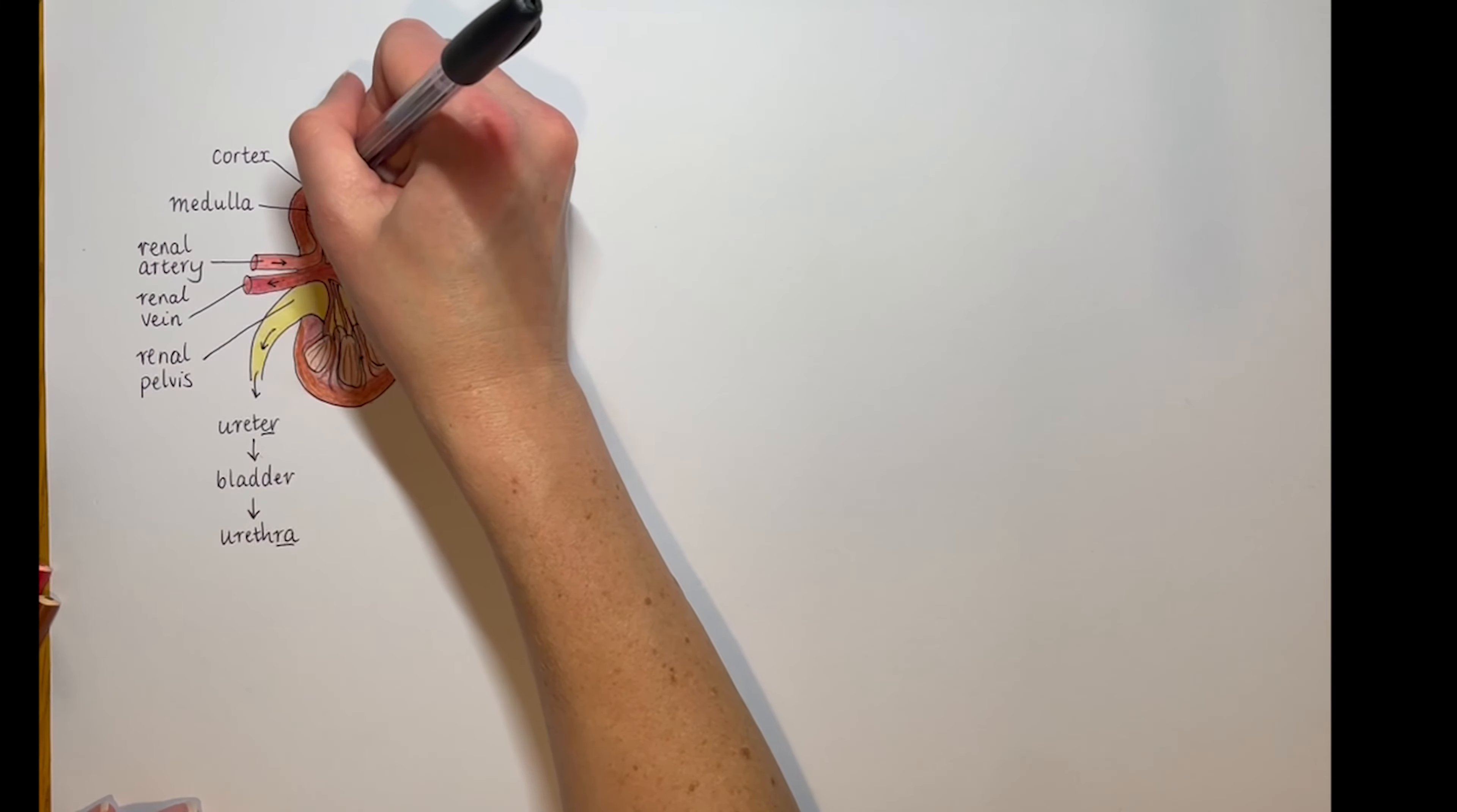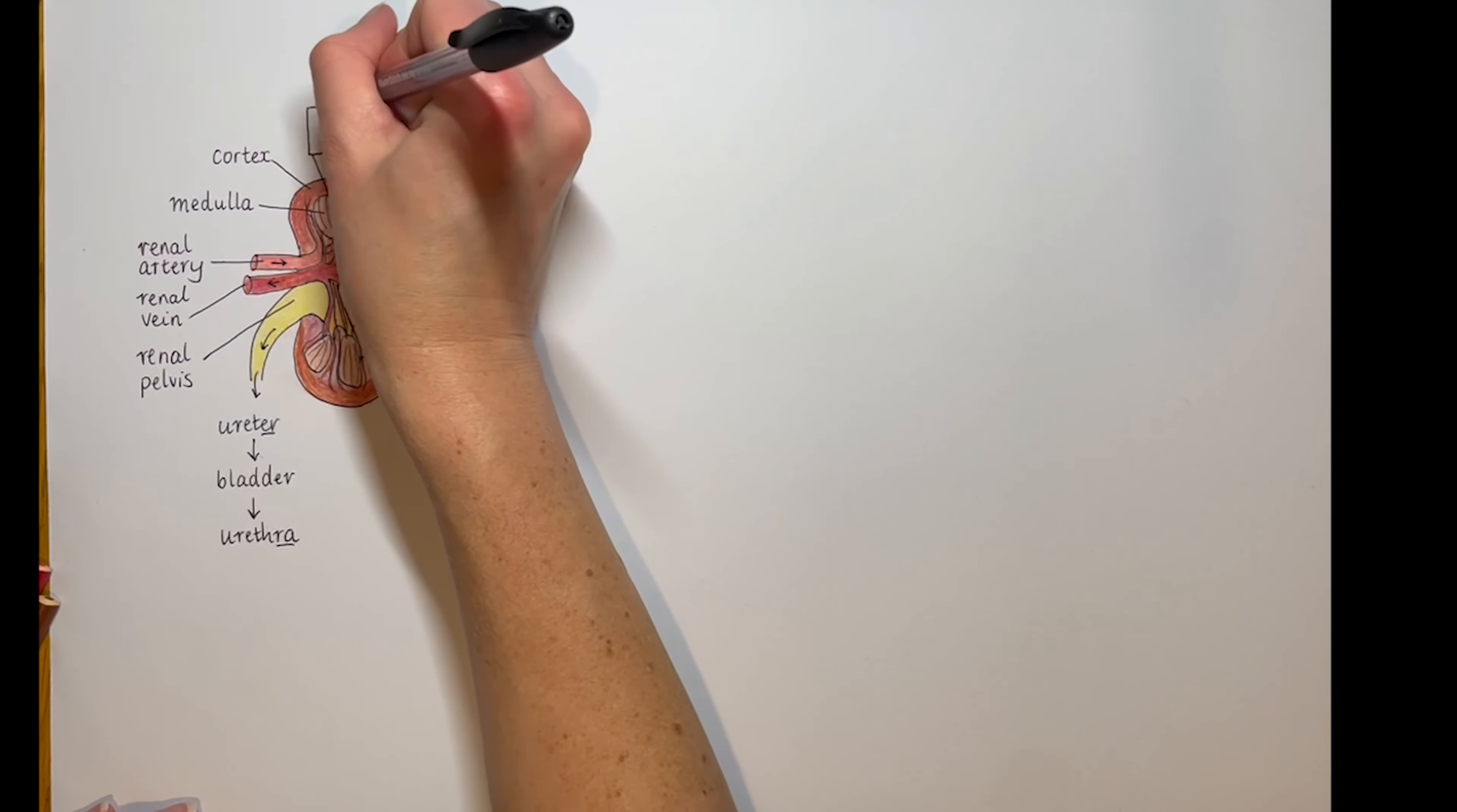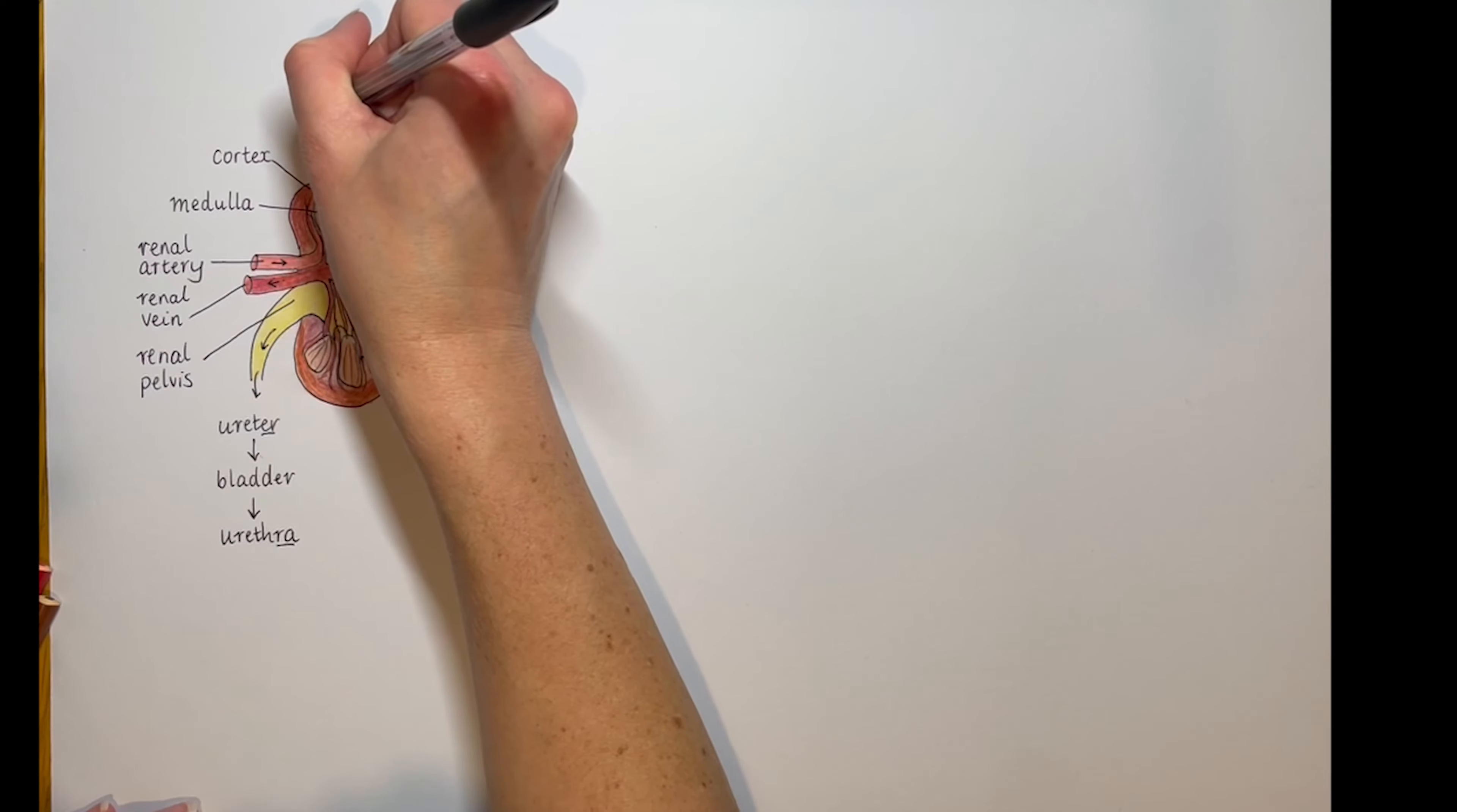So here we have the nephron, and there are actually two types, but for the IB we can skip over this. If you're interested to know, I'm going to show you a juxtamedullary nephron, but you can just call it a nephron. That is perfectly fine for your exams.